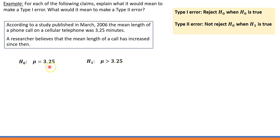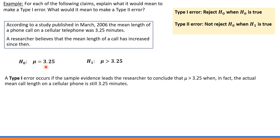What's going to be the Type 1 error? Type 1 error is when we reject the null hypothesis when in reality it is true. A Type 1 error occurs if the sample evidence leads the researcher to conclude that the mean length of a phone call has increased beyond 3.25 minutes, when in fact the actual mean call length is still 3.25 minutes.